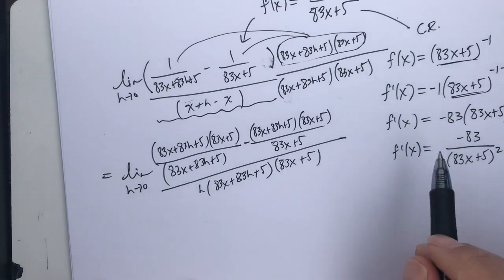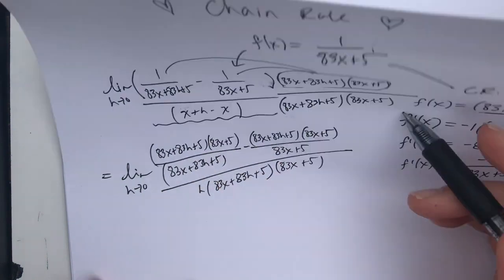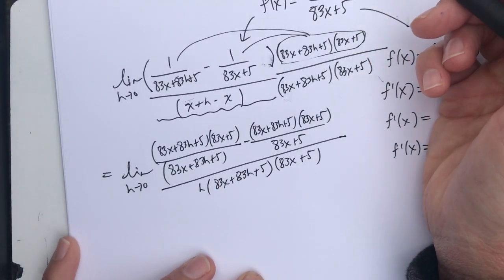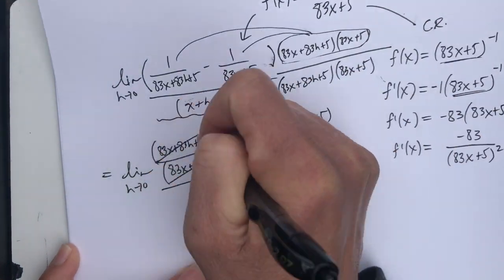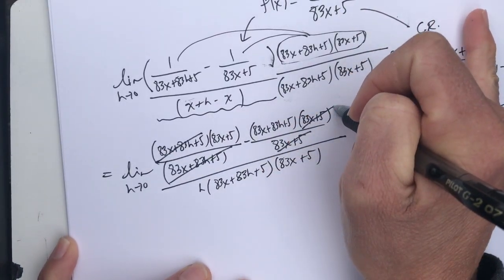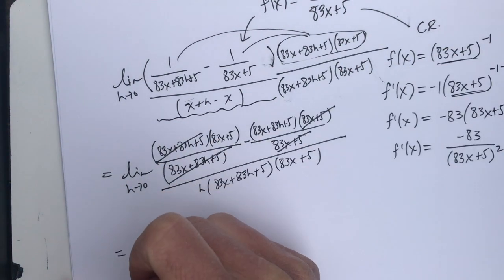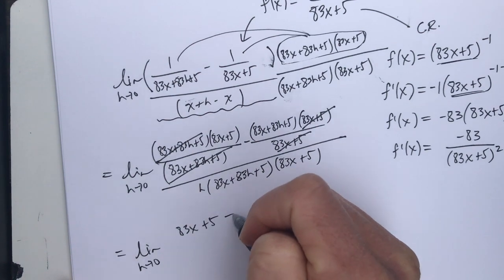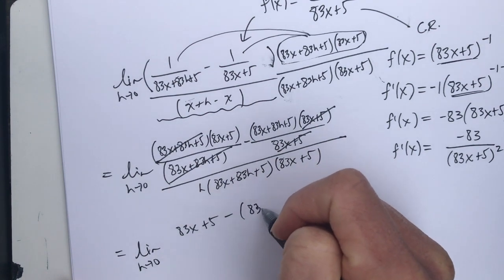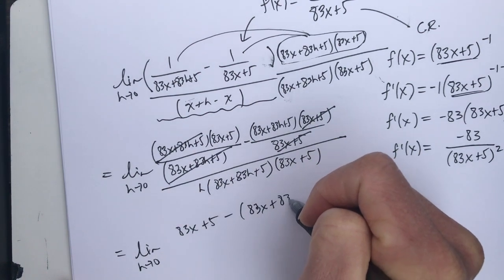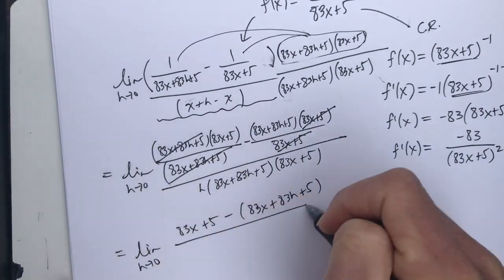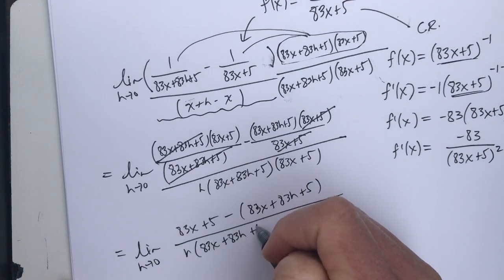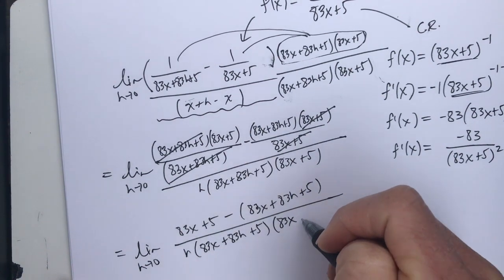So going back, why did I do this nasty distributing this nasty algebra? Well, things start to clean up for me. I can get rid of a nasty fraction inside of a fraction, because these guys will cancel and these guys will cancel. So my numerator will now just be 83x plus 5 minus 83x plus 83h plus 5 all over h times 83x plus 83h plus 5 times 83x plus 5.